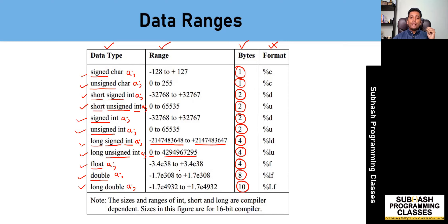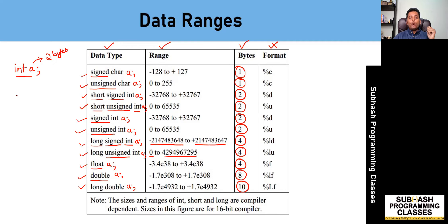These are the possible range of values that can be stored in variables of different data types. One important note: the sizes and ranges of short and long are compiler-dependent. In my current example, the sizes shown are for a 16-bit compiler, which means that if you write int A, the compiler treats it as a short integer and allocates two bytes. Also, if no qualifier is specified, it defaults to signed, meaning it can hold both positive and negative values.